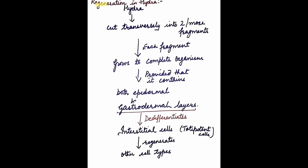Now let's discuss the example of morpholexis in hydra. Hydra shows a remarkable power of regeneration. Trembley found that if hydra is cut transversely into two or more fragments, each fragment grows to form a complete organism, provided that it contains both epidermal and gastrodermal layers.